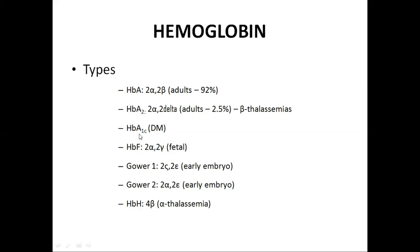Hemoglobin A1c is normally present in diabetic patients. Hemoglobin F consists of 2 alpha chains and 2 gamma chains, and in gamma chains 37 amino acids are different from the beta chain. Gower 1 and Gower 2 are present in early embryos and are also called embryonic hemoglobin.